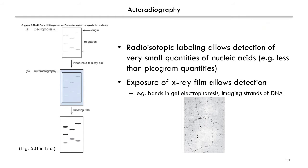By labeling your DNA or RNA with a radioisotope, you can detect it by exposure of an X-ray film. This could be, for example, from a gel electrophoresis. If you have radioactively labeled DNA, you could separate that by electrophoresis and then expose an X-ray film to the gel, develop the film, and see the DNA bands that contain radioactivity.